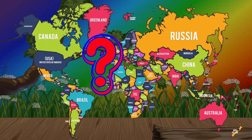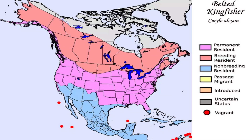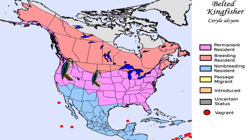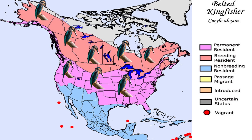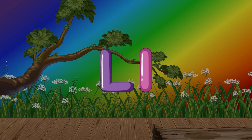K for kingfisher. Where is the kingfisher found? Most species of kingfisher are found in Australia, Asia and Africa in wooded tropical areas near water. Six species are found in the New World. Kingfishers are omnivores, but insects make up a large part of their diet. Some species also eat fish.